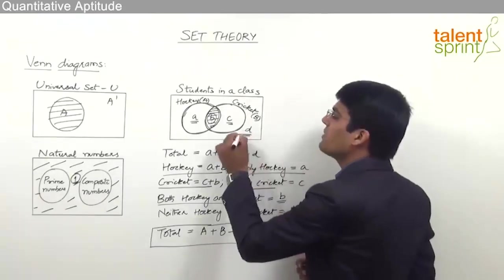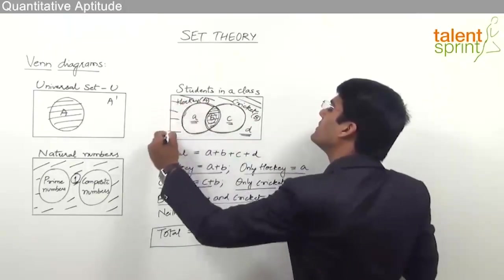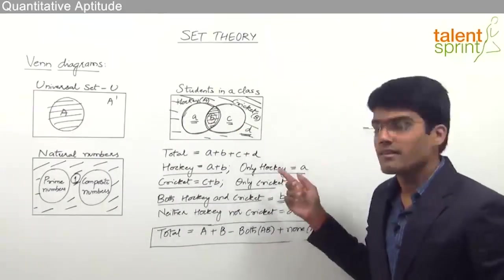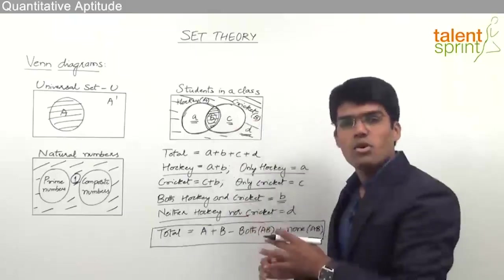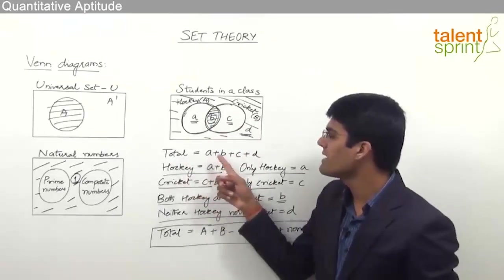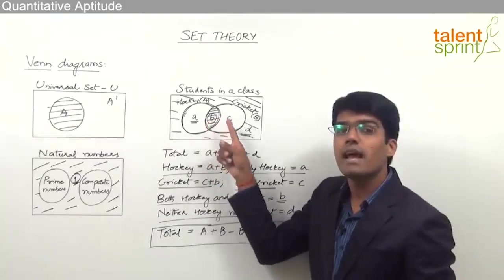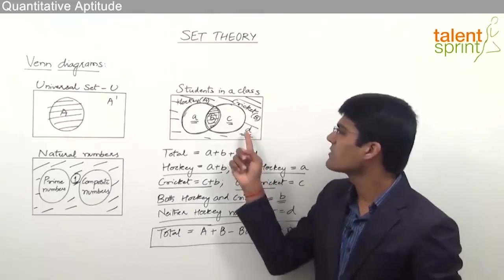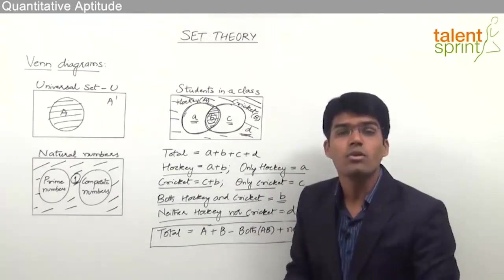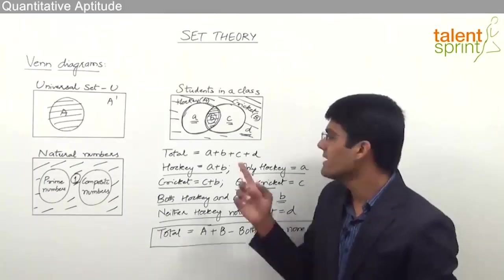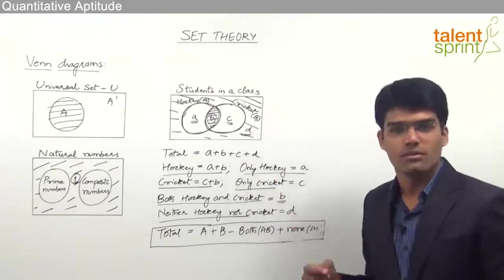The left out region 'd', outside both circles, represents students who neither play hockey nor cricket. So the total number of students equals a + b + c + d, where 'a' is only hockey, 'b' is both games, 'c' is only cricket, and 'd' is neither game. Note that 'd' can sometimes be zero if all students play at least one game. So depending on the question, we decide whether 'd' exists or not.